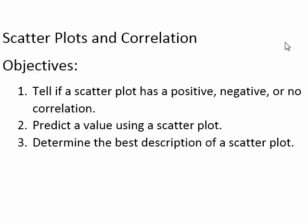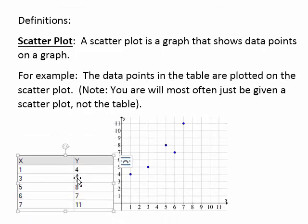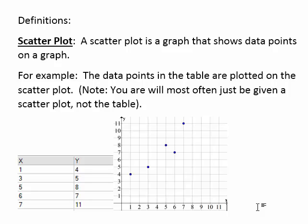In this video, we're going to be taking a look at scatter plots and correlation. The objective is that by the end of this video, you should be able to tell if a scatter plot has positive, negative, or no correlation, be able to predict a value using a scatter plot, and determine the best description of a scatter plot. A scatter plot is a graph that shows data points plotted on that graph. If you were given the points in a table and plotted all of those points on a graph, you would create a scatter plot.